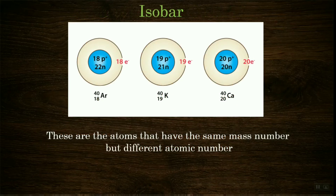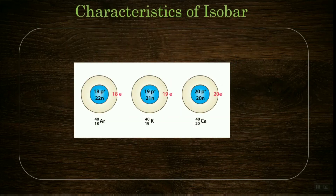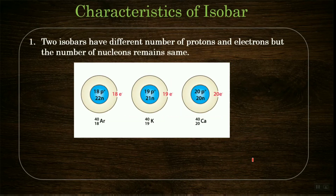Now, what are isobars? You can see here argon, potassium, and calcium — three different atoms of different elements. Unlike isotopes, which are different atoms of the same element, isobars are atoms of different elements that have the same atomic mass number but different atomic numbers. Argon has atomic number 18 and mass number 40, potassium has atomic number 19 and mass number 40, and calcium has atomic number 20 and mass number 40.